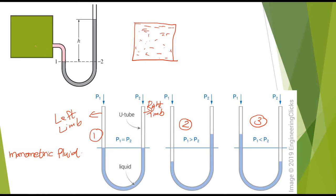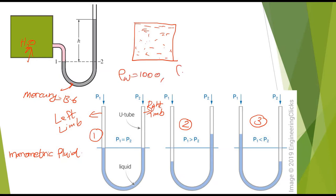For example, if we have to measure the pressure of water, we use mercury as the manometric fluid, because mercury has a specific gravity of 13.6 while water has a specific gravity of 1. The density of water is 1000 kg/m³ and the density of mercury is 13,600 kg/m³.